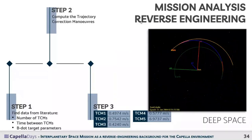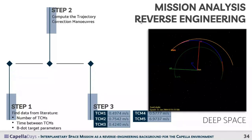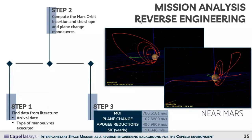The same procedure was applied for deep space: finding the travel time between departure and Mars arrival, identifying the number of trajectory correction maneuvers (TCMs) executed in the interplanetary phase, and computing those maneuvers to arrive at a precise time and attitude relative to Mars. For the near-Mars phase, starting from the arrival date and type of maneuvers, we computed all maneuvers for orbit inclination change and shape change, arriving at the final operational orbit.